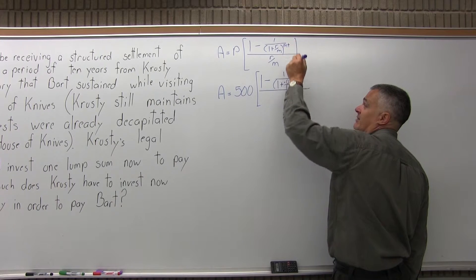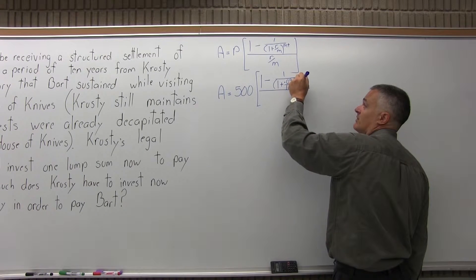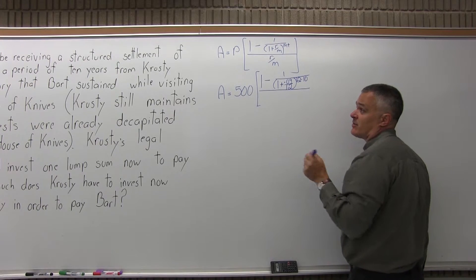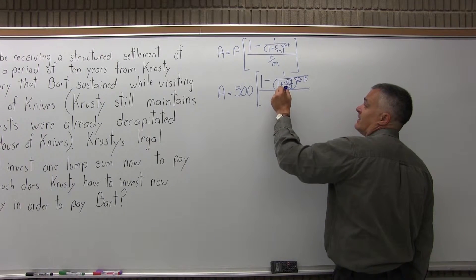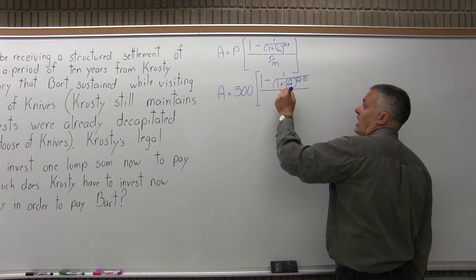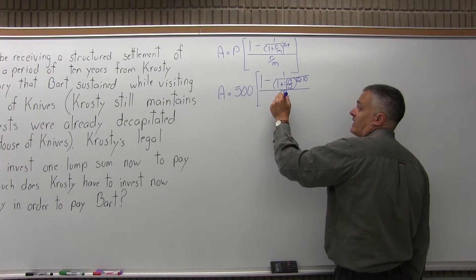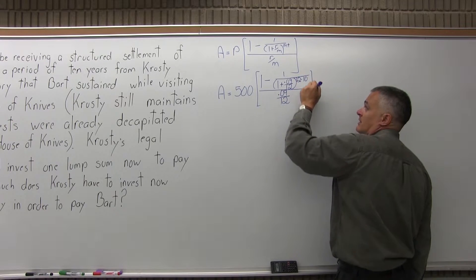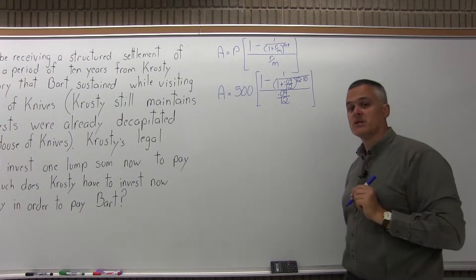It has an exponent of M times T again, M is 12 for the monthly compounding and monthly payment, T is 10, because that's the number of years. And then in the bottom of the brackets, the denominator of the brackets, R over M again, so .09 for the R, for the rate as a decimal, and 12 for the M, the type of compounding and the number of payments per year.